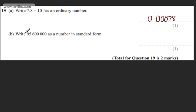In part B, again for one mark, we're asked to write 95,600,000 as a number in standard index form. Remember, our number we start off with must be between 1 and 10. We don't include 10, but we can include 1.